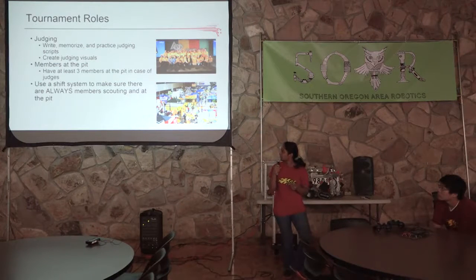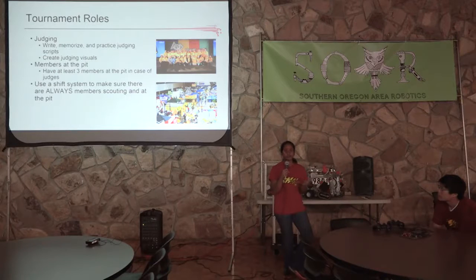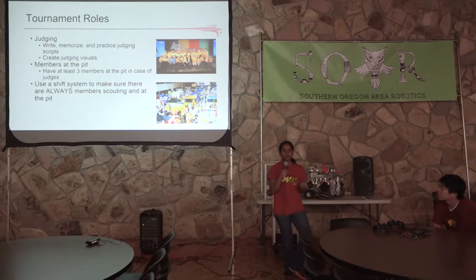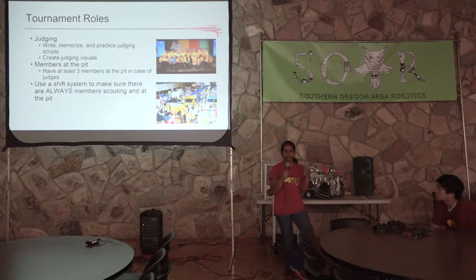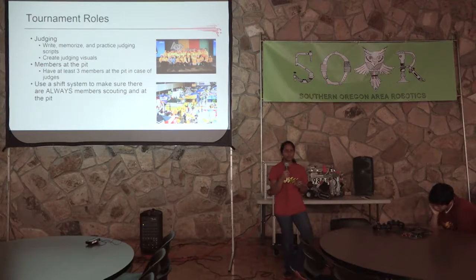The next role is members at the pit. In Oregon, the judges have a set time like 5:30 to 6:30, but once you get to super regionals and further, judges will just be roaming around. We fixed this with a shift system — scouts scouting from 12 to 1, 1 to 2, and the same with the pit. You want to have at least two to three members there at all times.